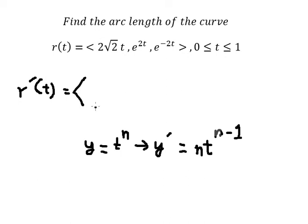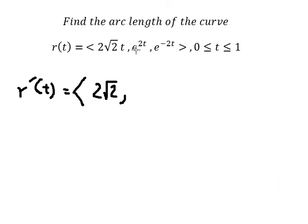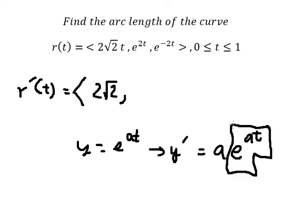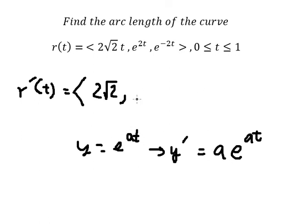The second one: if we take the derivative of e to the power of 2t, we keep e to the power of 2t, then multiply by the derivative of 2t, which gives us 2. So the derivative of e to the power of 2t is 2e to the power of 2t, and for e to the power of negative 2t we get negative 2e to the power of negative 2t.